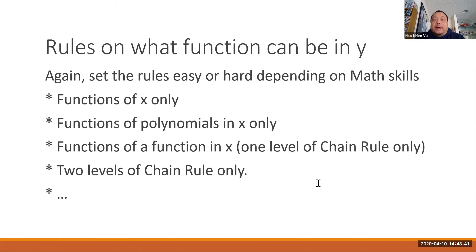You can also make rules on what can be found in your function y, what two functions can be multiplied together. The example that we saw, both functions are just of x only. We're not talking about function of a function of x. As you get more advanced, you can allow more things like functions of polynomial in x only. So it could be sine of 2x minus pi. Or you can be more generalized, function of any function, so you could have sine of ln of x. And you may want to limit to just one level of chain rule. And then when you get more advanced, then you can say two levels of chain rule, three levels or any level of chain rule.